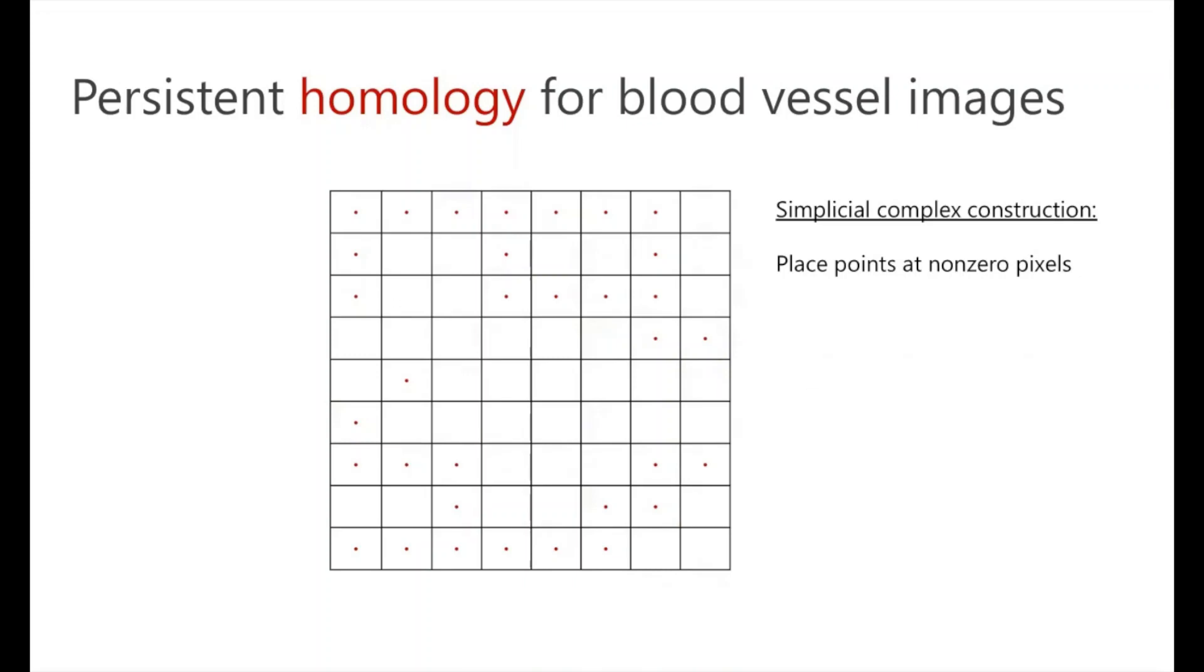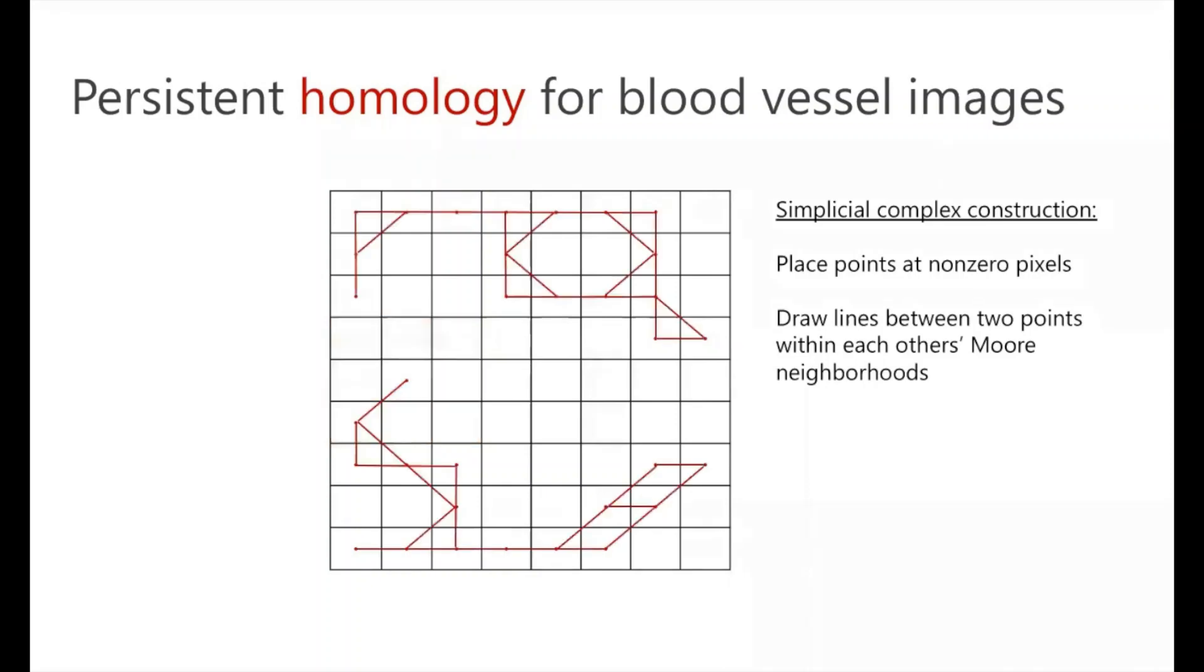Next we can create the lines in our simplicial complex, and the way in which we're going to do that is we're going to look at the Moore neighborhood of each of our points, where the Moore neighborhood is the eight surrounding pixels. And for any two points that are within each other's Moore neighborhood, we'll draw a line between them. And now we can continue this process for all of the points in our simplicial complex to create all of the lines in our simplicial complex.